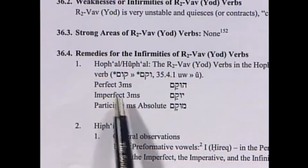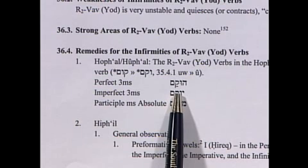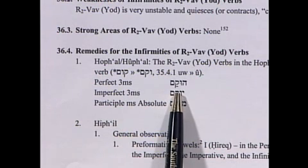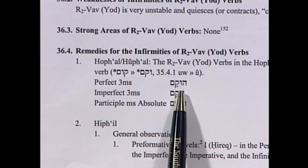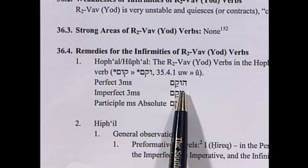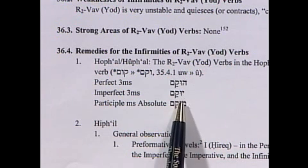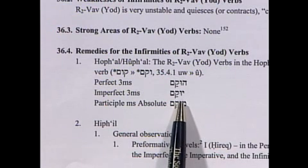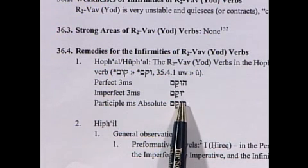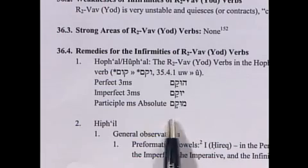Looking at the perfect 3MS, you can see you have a hukam. This is simply acting like an original R1 Vav-Yod. In the imperfect, we're simply changing the performative he to an etan letter, and the participle has an original mem. This is the easiest of the forms because it's acting like a verb we've seen before, so it should not cause you a lot of trouble.